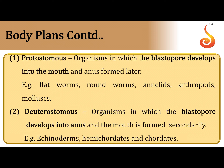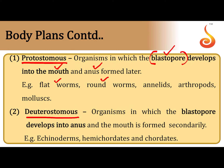Within the tube-within-tube body plan, there are two types: protostomes and deuterostomes. In protostome organisms, during embryonic development the mouth is formed first and the anus is formed later. The blastopore — an aperture that develops in the embryo — itself develops into the mouth. Protostomes include flatworms, roundworms (Aschelminthes), Annelida, Arthropoda, and Mollusca.